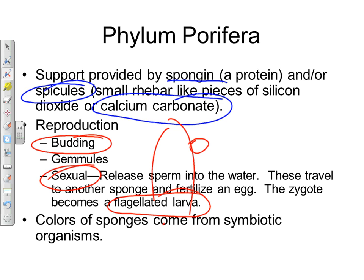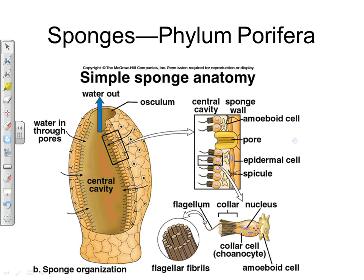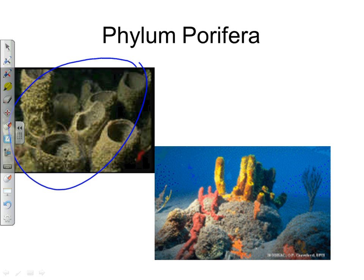Most sponges naturally don't have much color, but sponges found in the Caribbean and other tropical areas are often very colorful. This is because sponges frequently have symbiotic relationships with algae that grow inside them. The algae perform photosynthesis and provide the sponge with sugar, while the sponge provides housing, support, and protection in return.